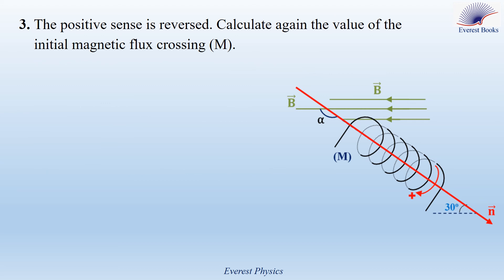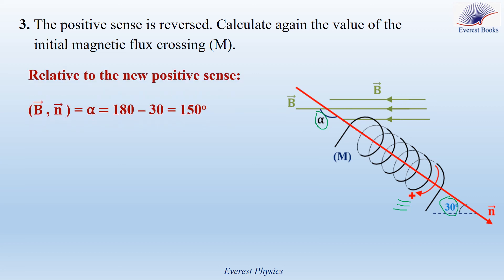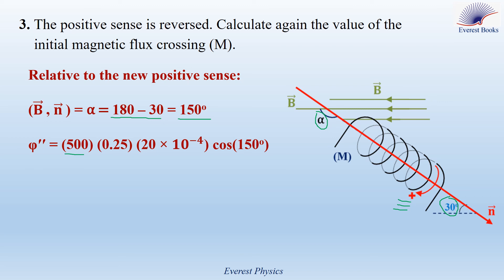Part three: the positive sense is reversed. Curl the fingers of your right hand with the new positive sense to find the new unit vector N. Alpha and 30 degrees are now supplementary angles, so the angle between B and N equals 180 minus 30, which is 150 degrees. The new magnetic flux equals 500 times 0.5 times 20 times 10 to the power minus 4 times cosine 150 degrees, giving phi equal to minus 0.217 Weber.